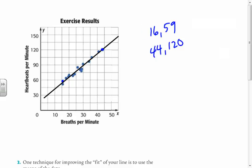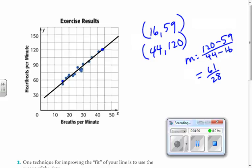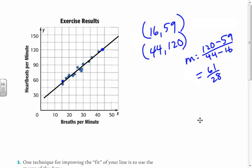And we know how to write an equation when we're given data like this. First thing we do is find the slope. And that would be 120 minus 59 over 44 minus 16, which equals 61 over 28. Now I'm going to go ahead and calculate that. That's about 2.18. I have to round that a little bit. So that's my slope.